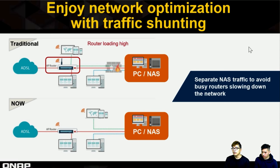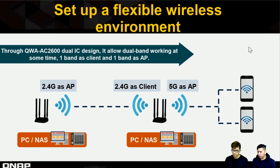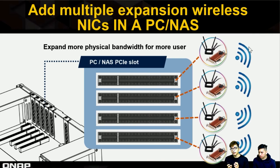Without an AP router in between, speed is faster and bandwidth consumption is lower, so AP loading is also lower. The AC2600 can also act as a client — you can use one band as a client and another band as an AP to set up a flexible wireless environment. If you have a PC with more than two PCI slots, you can install three or four adapters to create several separate network environments.